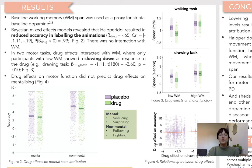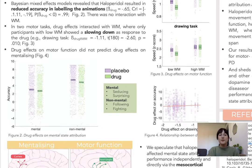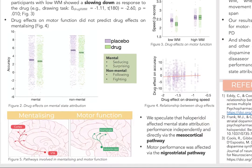In addition, drug effects on movement speed were not at all related to drug effects on mental state attribution accuracy. We suspect that our results show that there were different dopaminergic pathways involved in the drug effects we observed in our mentalising task and in our two motor tasks.